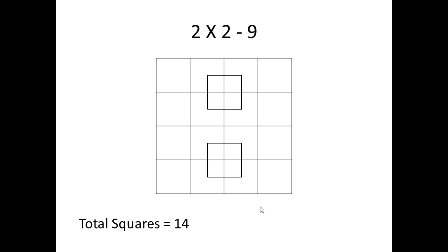The next count will obviously be the 1x1 grids, and there are actually 1, 2, 3, 4, 5, 6, 7, 8, 9, 10, 11, 12, 13, 14, 15, 16, plus the two overlapping squares, which makes 17 and 18. So we now have 18 1x1 squares, which brings our total count up to 32 so far.